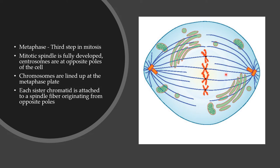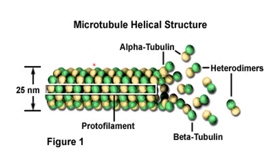These mitotic spindles are made up of microtubules. A microtubule has a helical structure and is composed of tubulin subunits — mainly alpha tubulin and beta tubulin. One alpha tubulin and one beta tubulin arrange together to form a heterodimer. Many such heterodimers arranged next to each other form a protofilament, and protofilaments arranged together form a microtubule. This assembly process is known as polymerization.